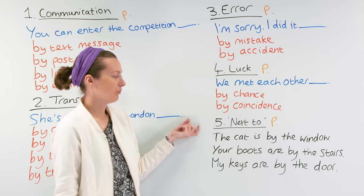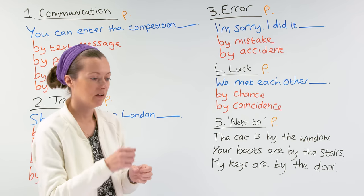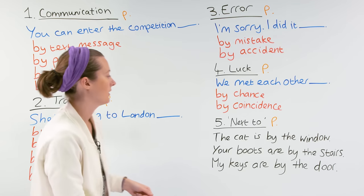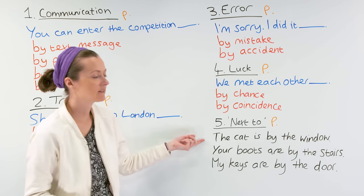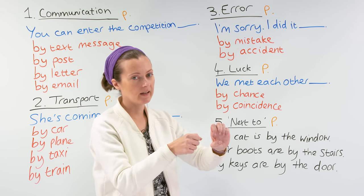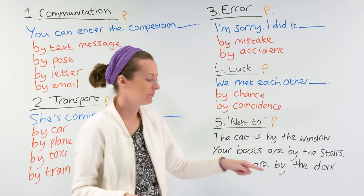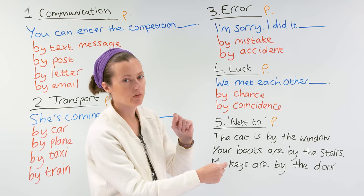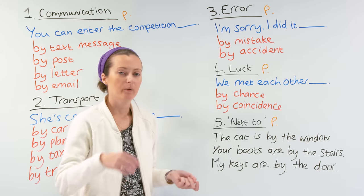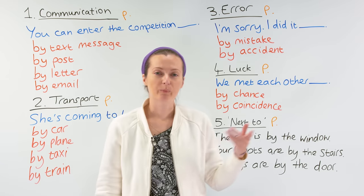The next use of 'by' means next to — when we use 'by' in these sentences, we mean something is positioned next to another thing. Used as a preposition: the cat is by the window. Your boots are by the stairs. My keys are by the door.